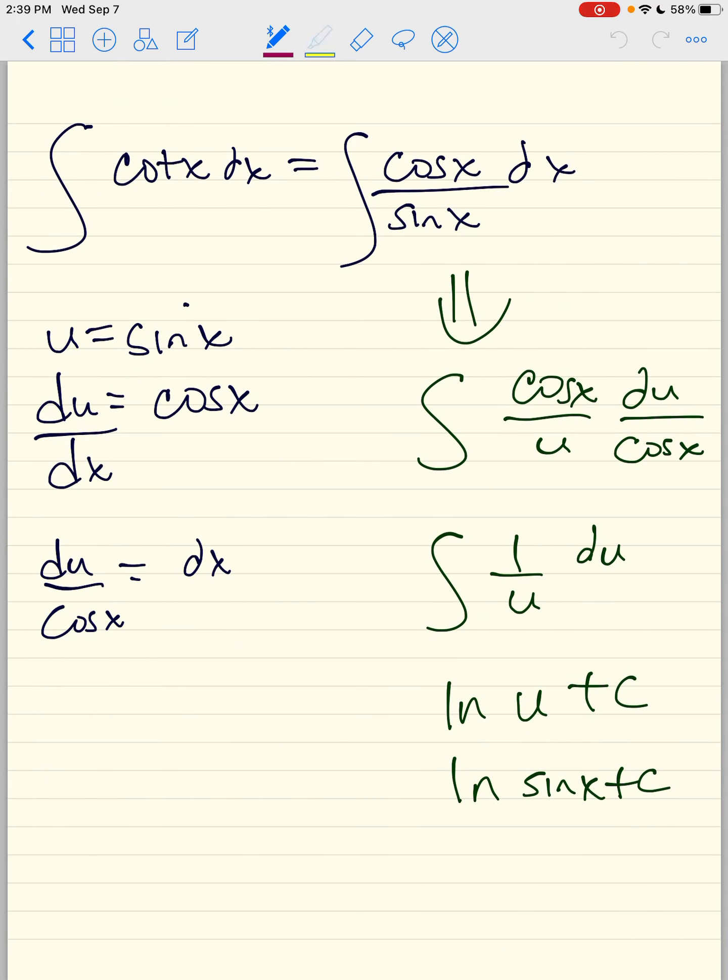Well, what about cotangent? Cotangent follows the same exact procedure. Cotangent is cosine over sine. So we're going to set the bottom equal to u again. As in most cases, when you're integrating quotients, the denominator is your u. You get sine x. Du dx is cosine x. You cross multiply.